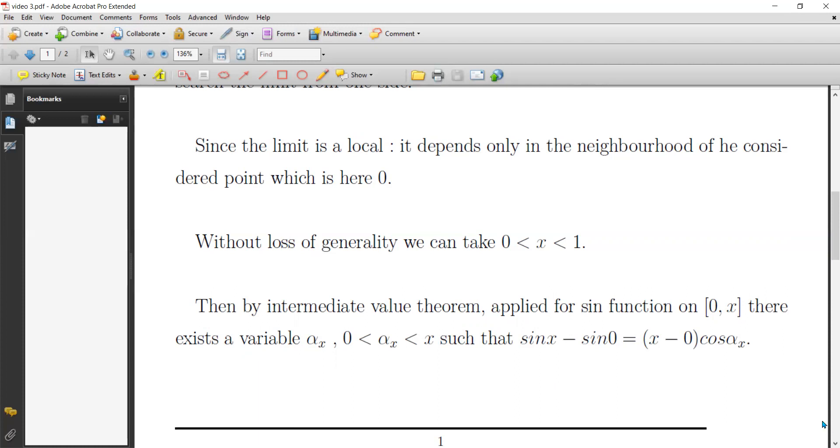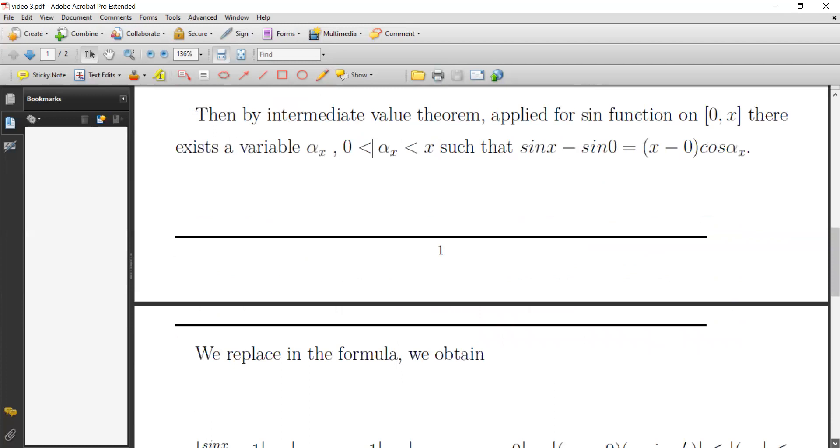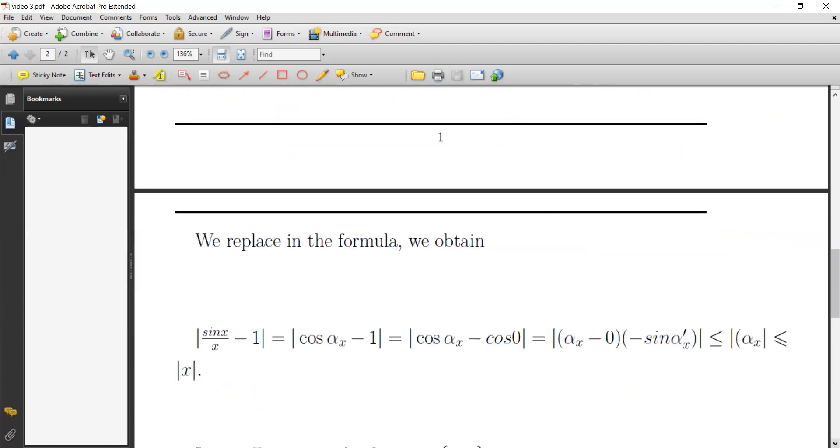We replace this in the formula and we will obtain sine x over x minus one is equal to cosine alpha x minus one. We are here.